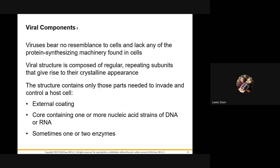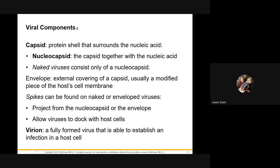The capsid — that outer layer — is just repeating units of identical proteins assembled in a somewhat geometric fashion. Viruses basically just have a coat, the DNA or RNA, and maybe an enzyme — that's about it. So how do we categorize them? First, their genome: are they a DNA virus or an RNA virus? I'll paint with a broad brush, but I'll give it to you now.